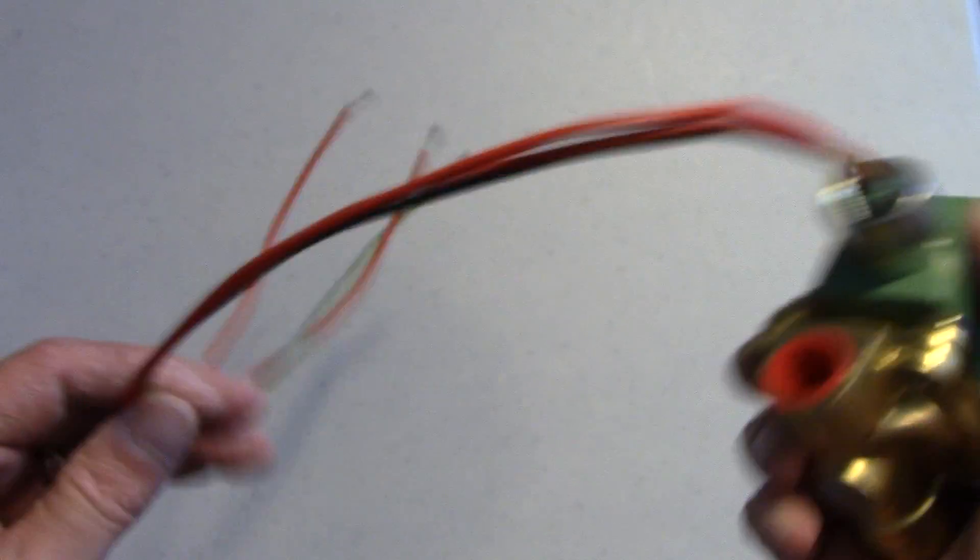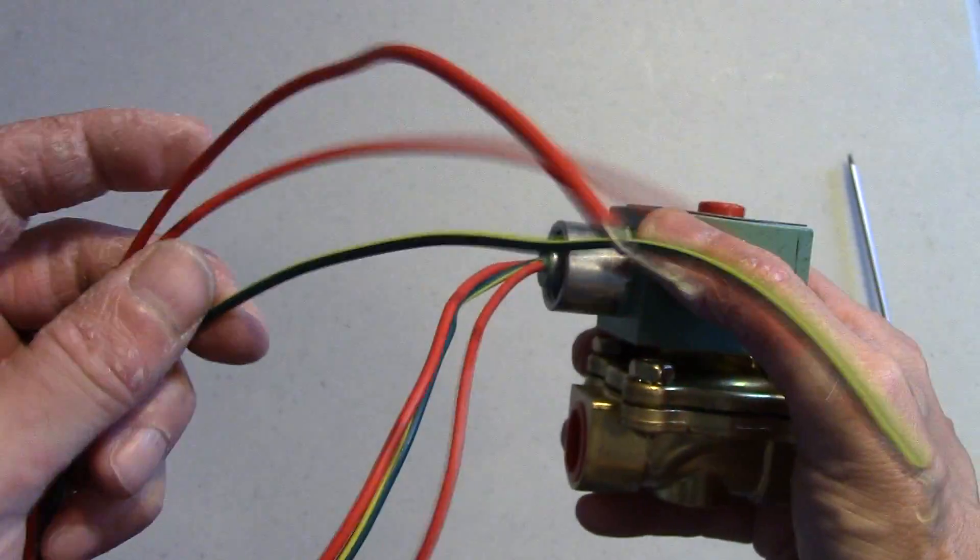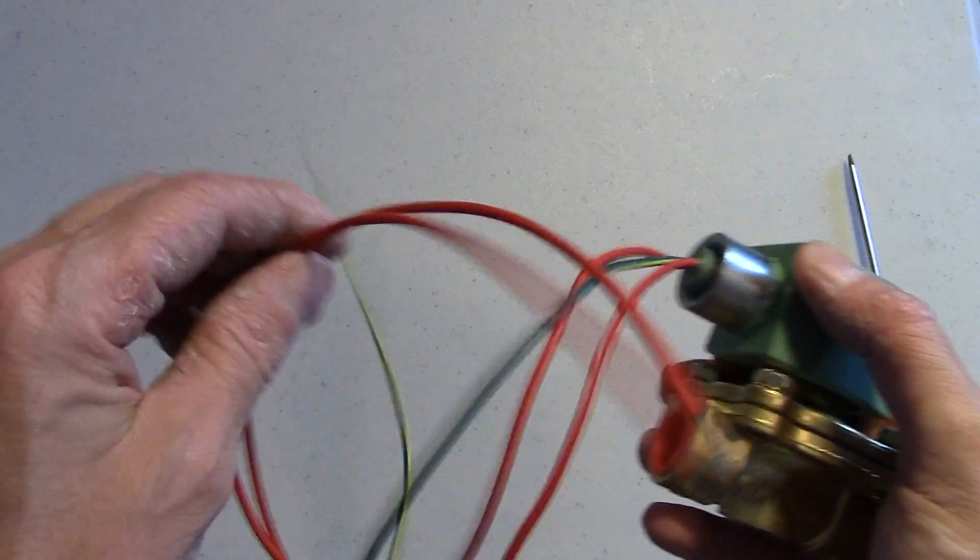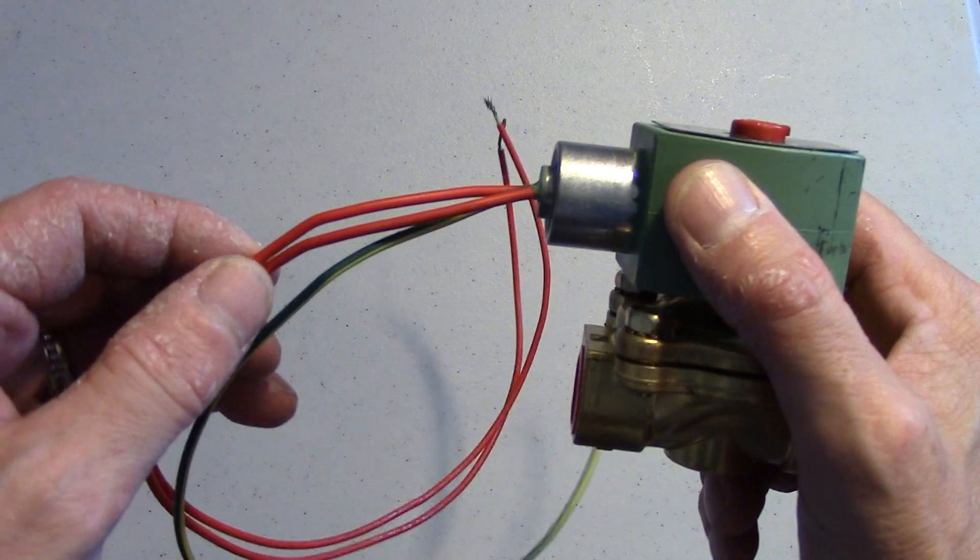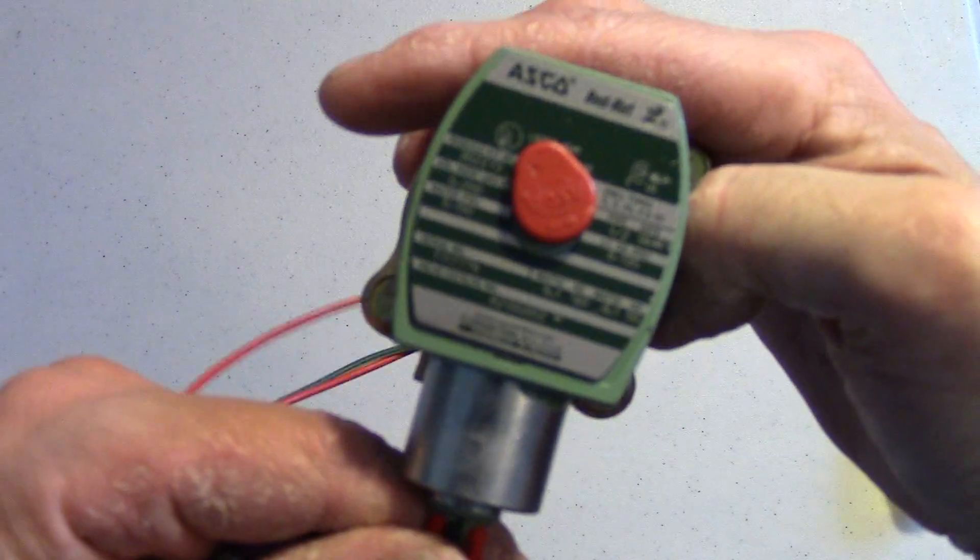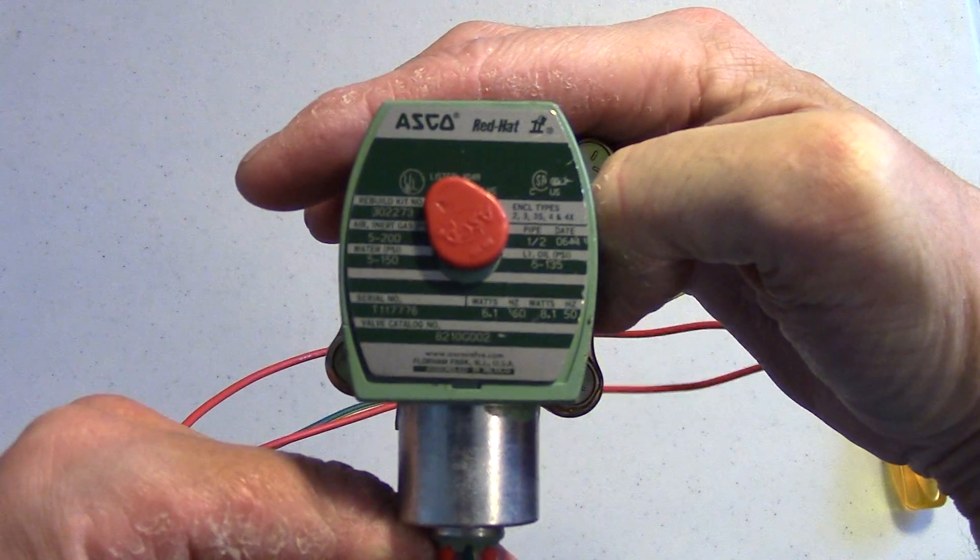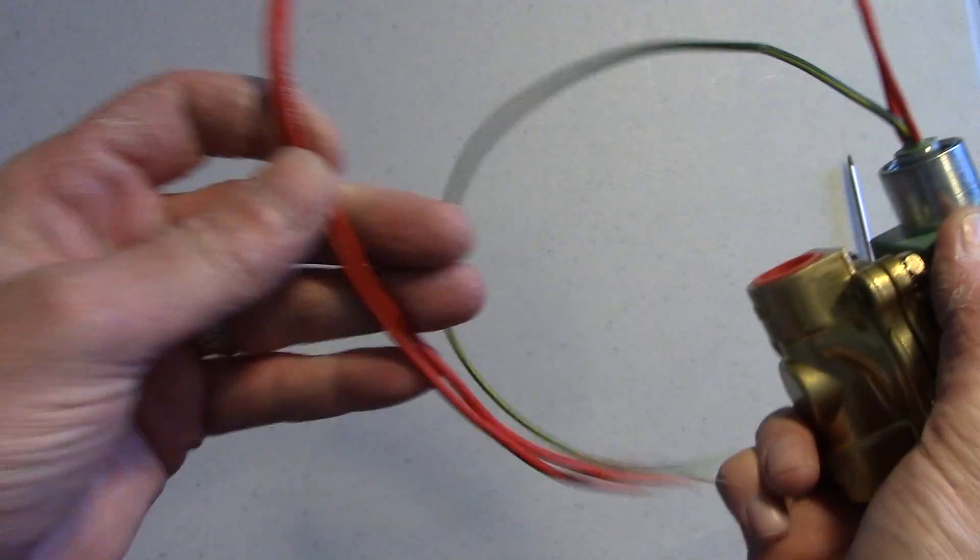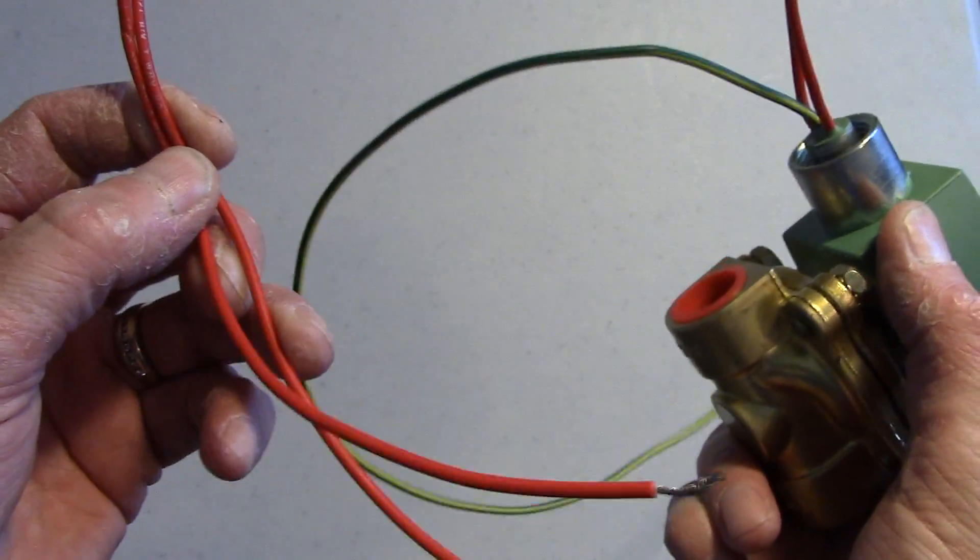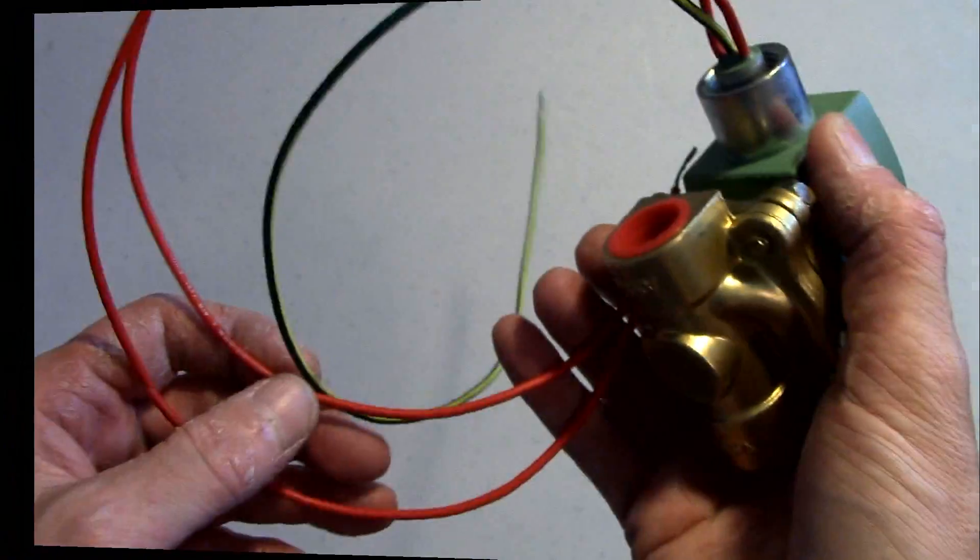The solenoid valve we'll be using has three wires. It has the ground wire and two other wires. Normally, a solenoid valve would have a hot and a neutral. For this solenoid valve, the one that we sell, ASCO, polarity is not critical. So there is no designated hot or neutral wire. So we'll just wire this up into the controller.